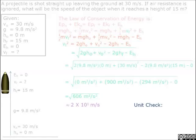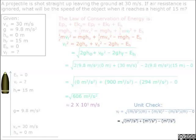Now we do a unit check. So meter over second squared times meter plus meter over second squared minus meter over second squared times meter minus 0, all under the square root.